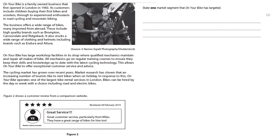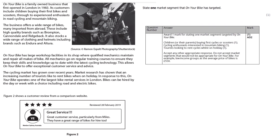Let's take a look at the mark scheme for stating one market segment that On Your Bike has targeted. You could have stated children or their parents buying first cycles or scooters, or cycling enthusiasts interested in mountain biking, or tourists looking to rent cycles whilst on holiday, or any other appropriate response.